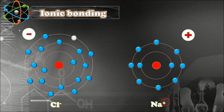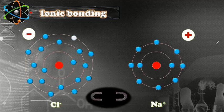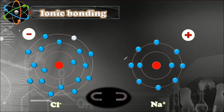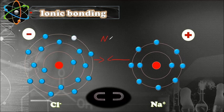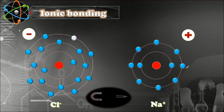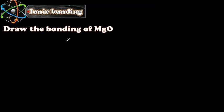Because they have opposite charges, there is an electrostatic force of attraction between these two atoms, so they will attract each other and bond. They will stay together in a compound and we write it as NaCl — sodium chloride. This is how these two atoms bond.